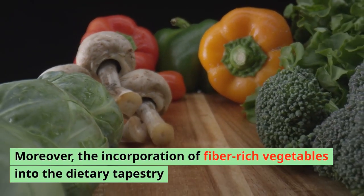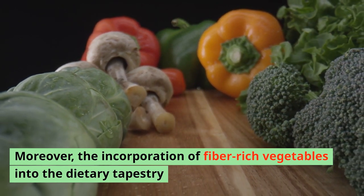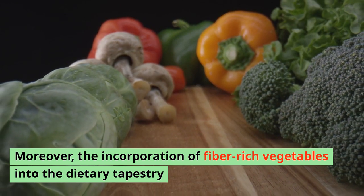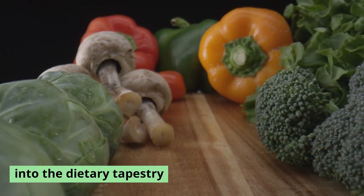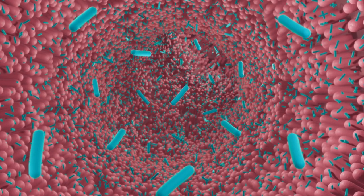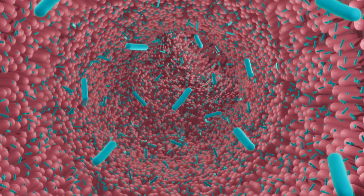Moreover, the incorporation of fiber-rich vegetables into the dietary tapestry not only nourishes the body but also cultivates a harmonious symbiosis with gut bacteria, unleashing a cascade of metabolic benefits. Within the microbial crucible of the gut, fiber serves as sustenance for a flourishing ecosystem of beneficial bacteria.